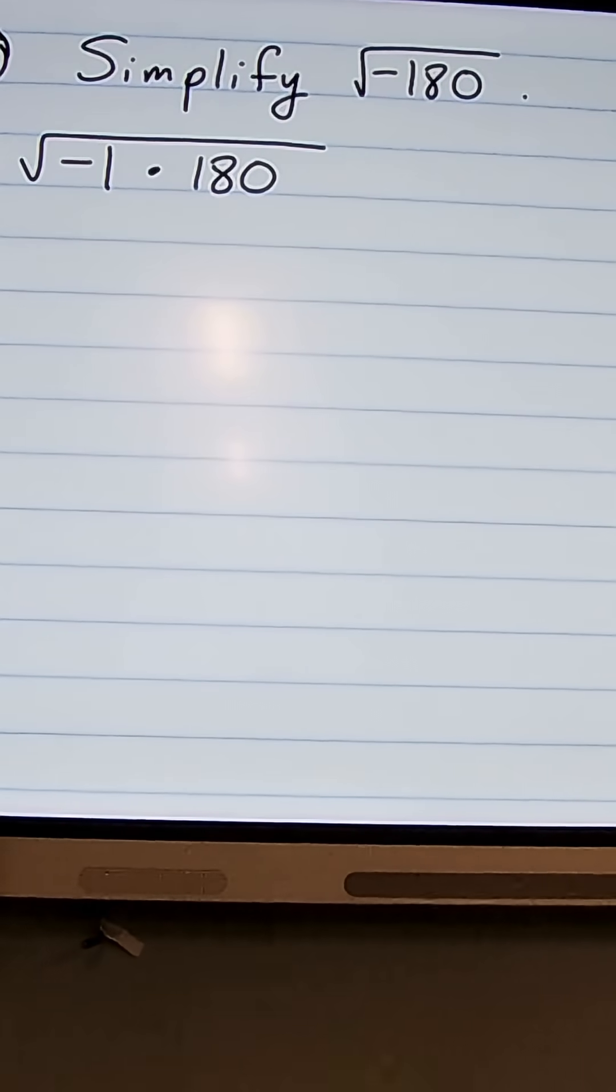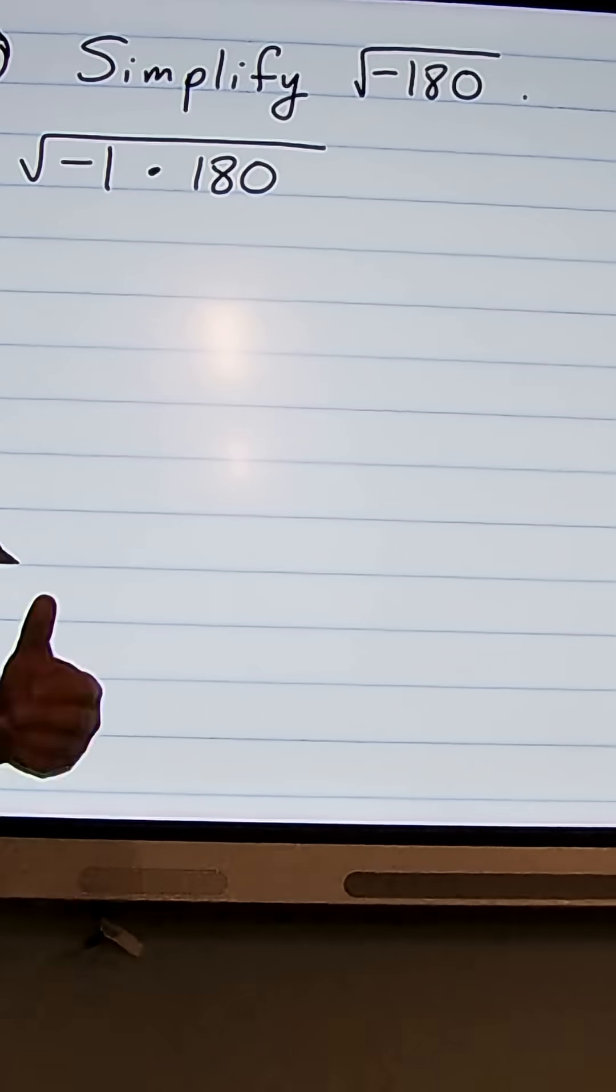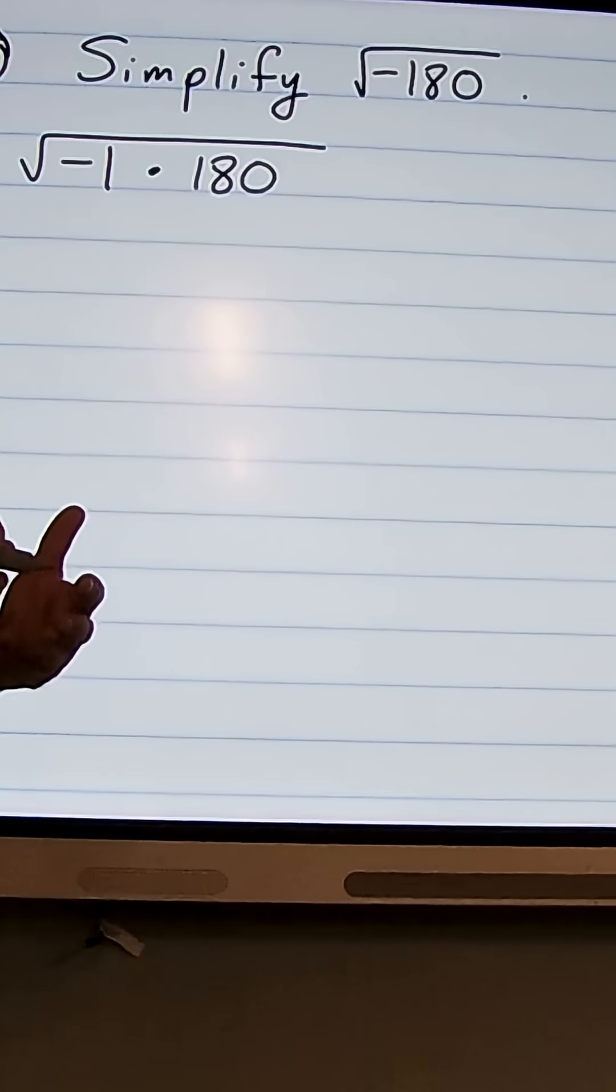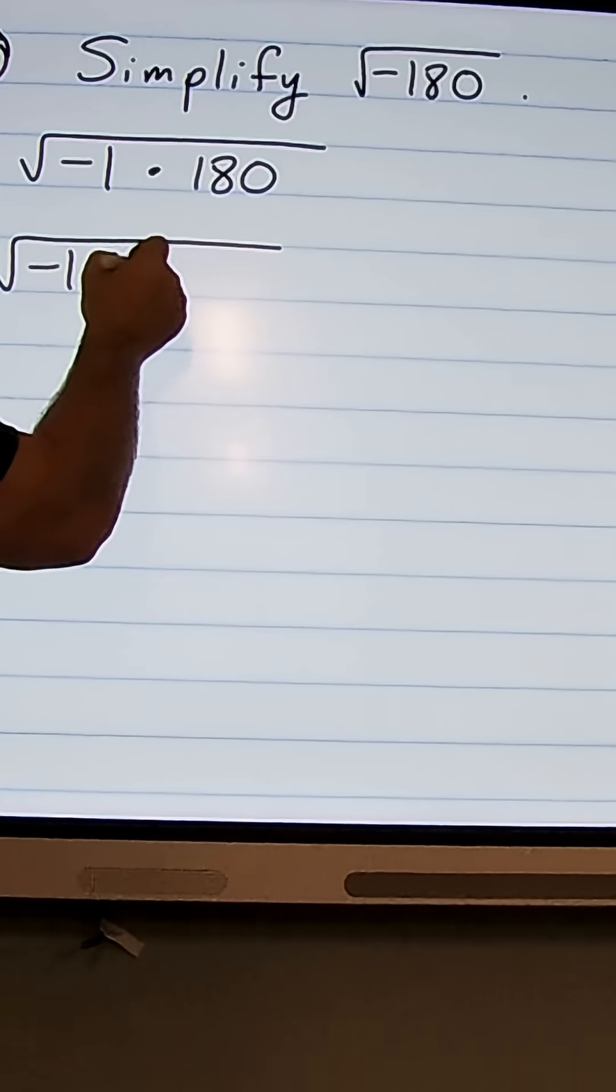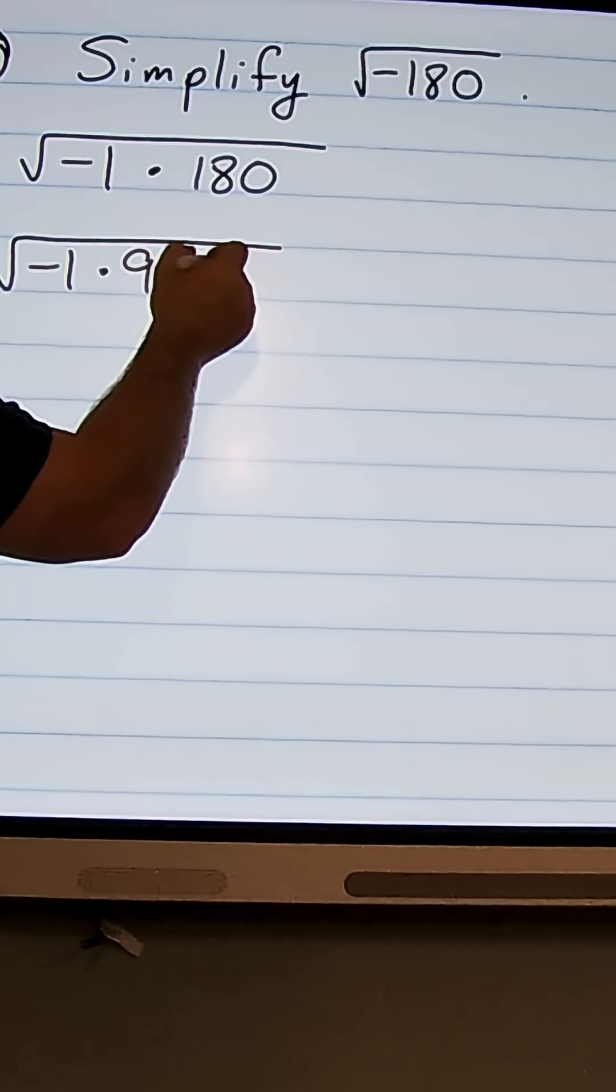Okay, so we can also break down 180. I know 180 is like 18 times 10, so it's divisible by 9. So let's start to break it apart that way. So we're going to have negative 1 times 9 times 20.